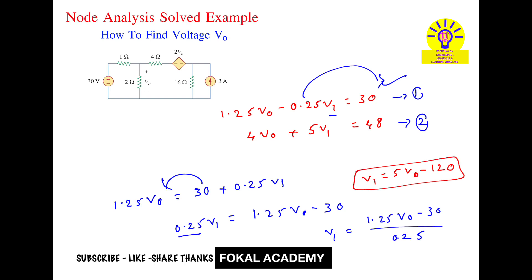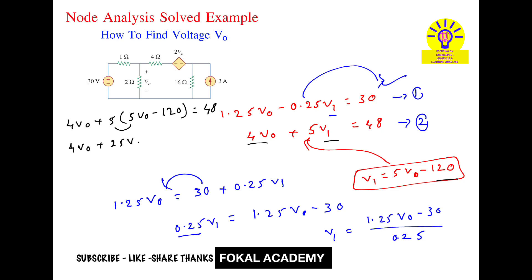Now substitute V1 equals 5V0 minus 120 into Equation 2: 4V0 plus 5 times (5V0 minus 120) equals 48. This gives 4V0 plus 25V0 minus 600 equals 48, so 29V0 equals 648, therefore V0 equals 648 divided by 29.